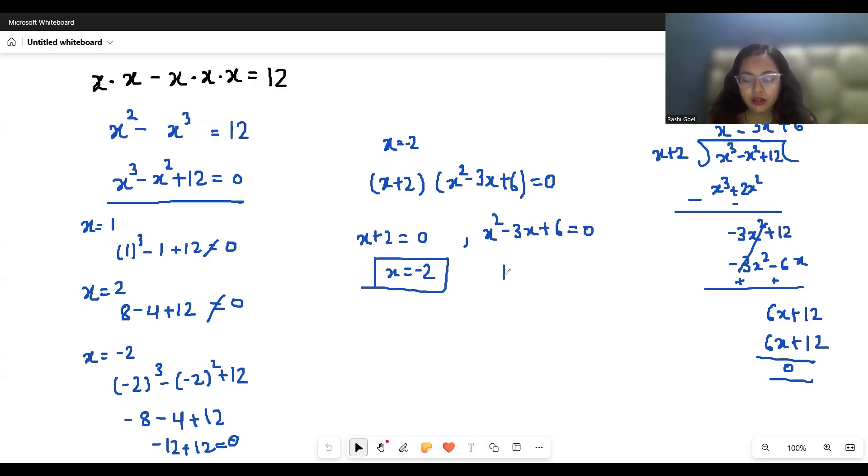We'll check the discriminant. This gives us 9 minus 24, that is negative 15, which is complex roots. So x equals minus b, 3 plus minus square root of 3 squared minus 4 times 1 times 6, by 2 times 1. So 3 plus minus square root of 9 minus 24 by 2.